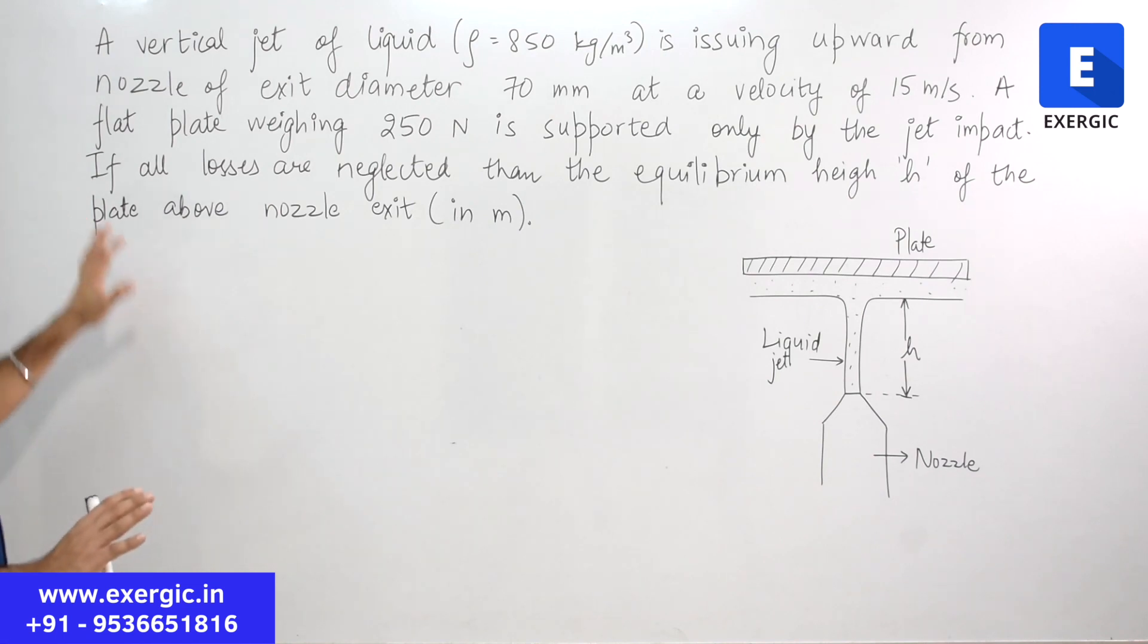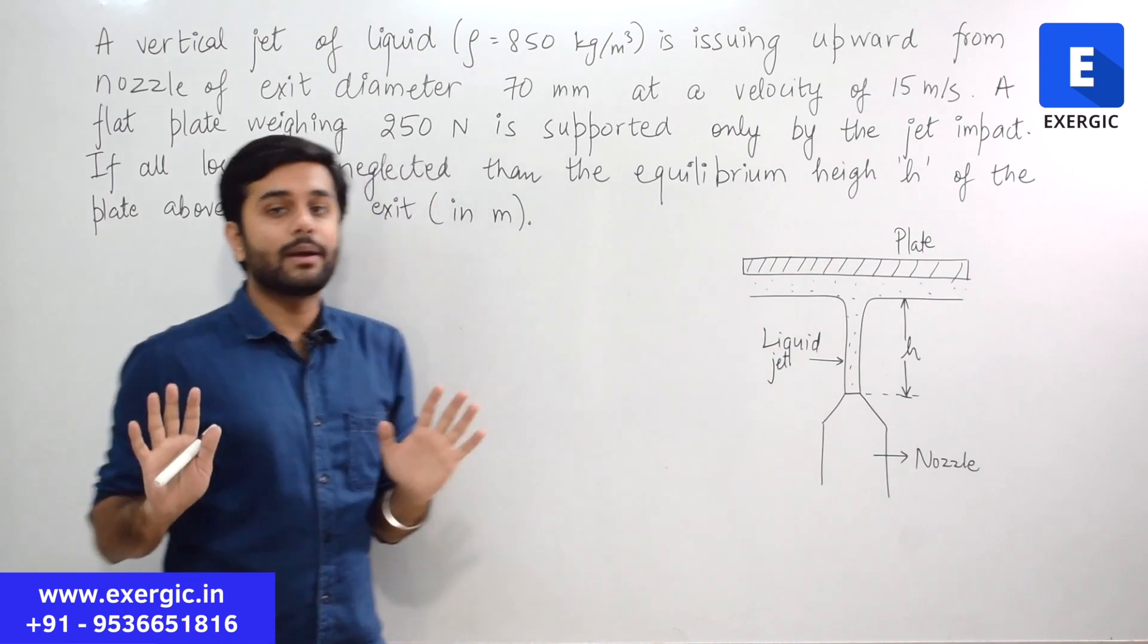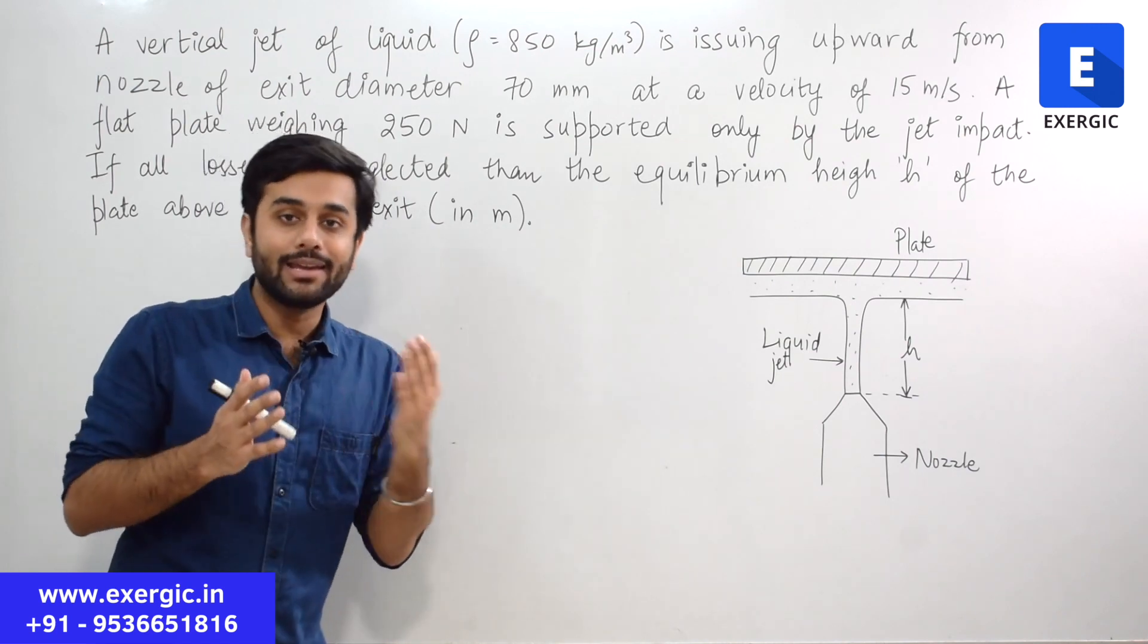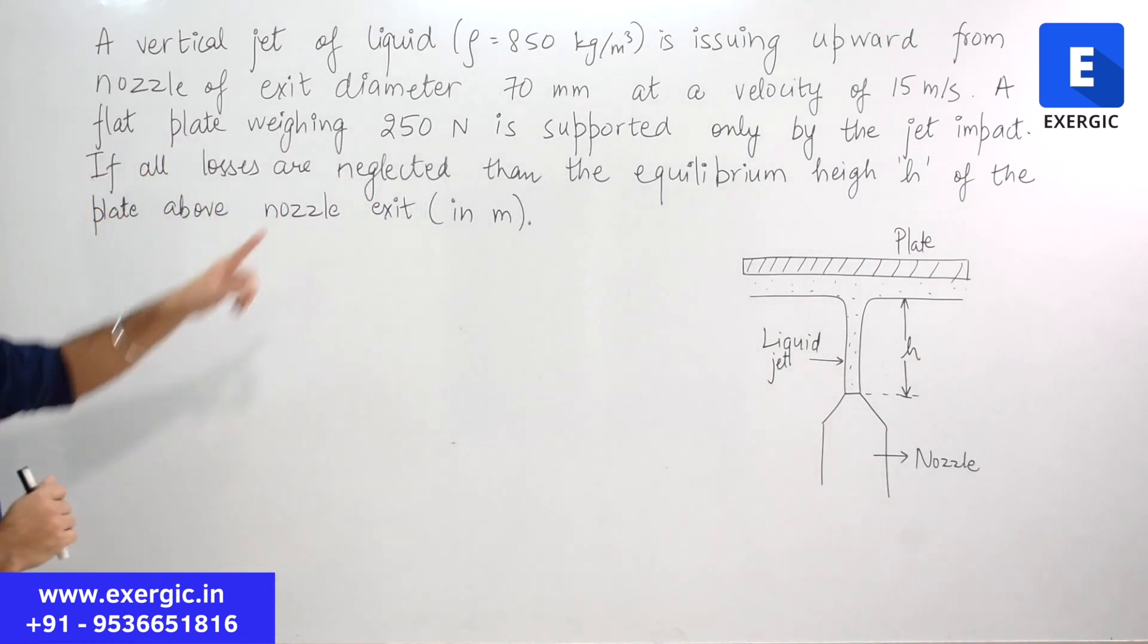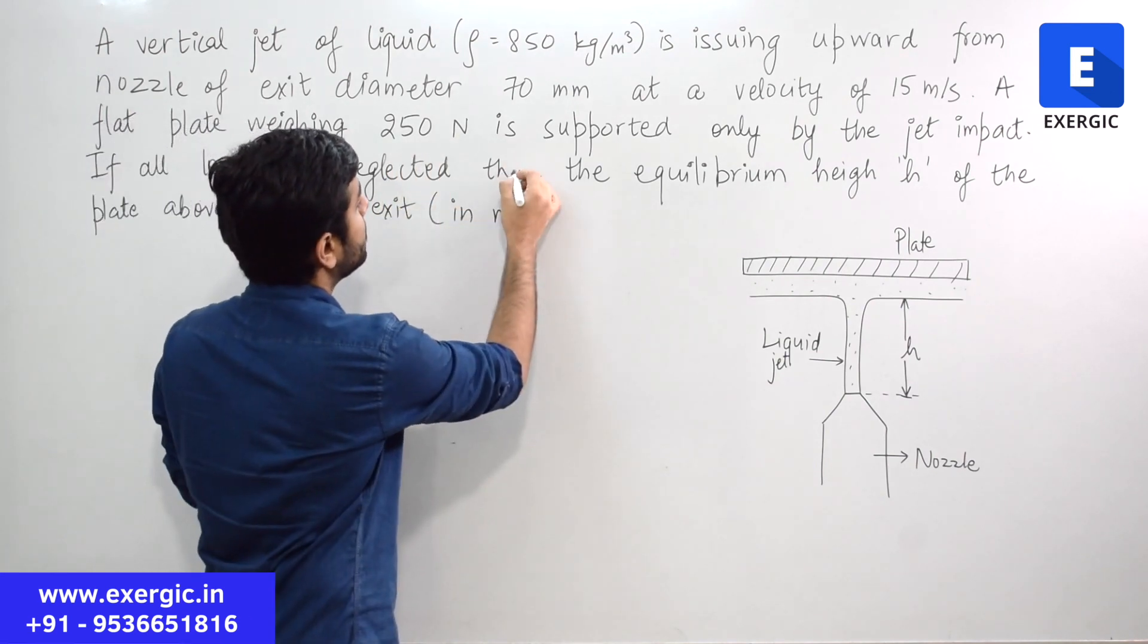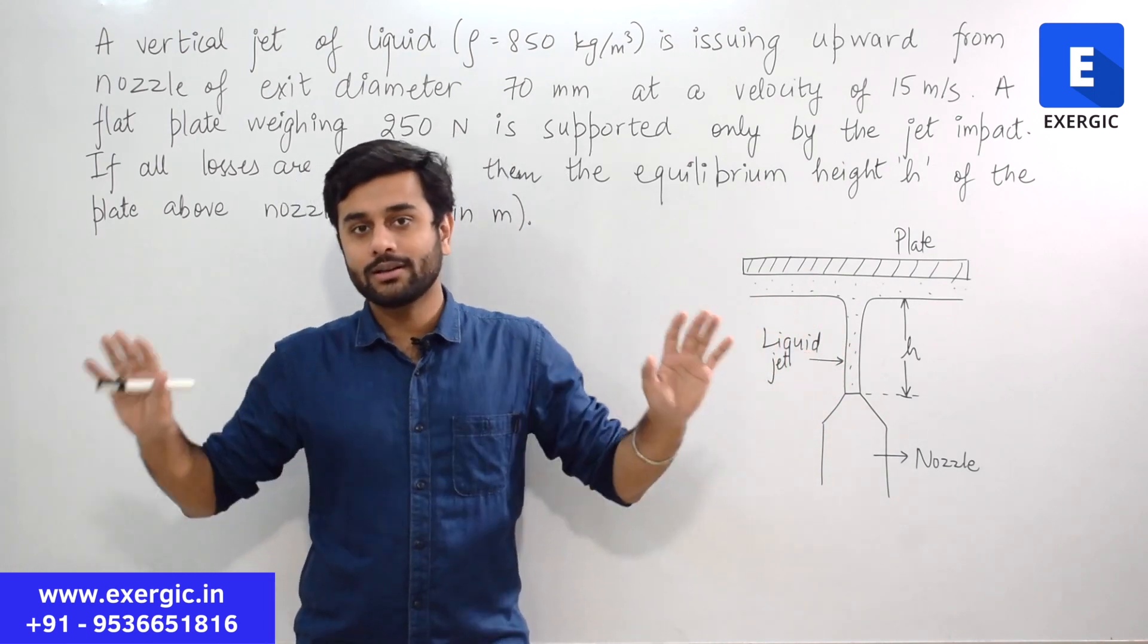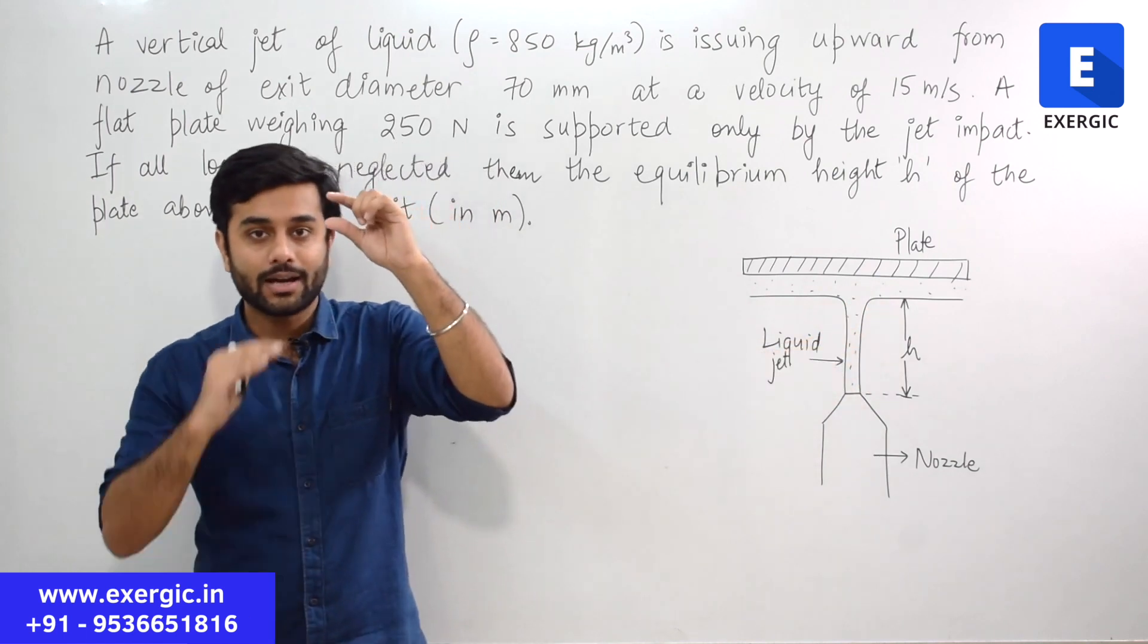This is the nozzle. You can clearly see that it is issuing the water in the upward direction. The diameter is given to you, the velocity is 15 meter per second. A flat plate weighing 250 Newton is supported only by the jet impact. This is the plate. The weight of the plate is given to you. Dimensions are not given, they are not required. Only the weight is given and that is solely supported by the impact. The impact of the jet is going to apply a force in the upward direction that is going to balance the weight totally. If all losses are neglected, then the equilibrium height h of the plate above nozzle exit will be how much in meters?